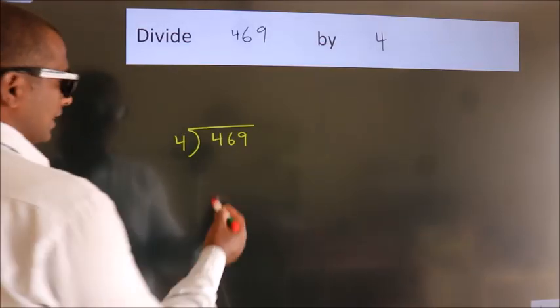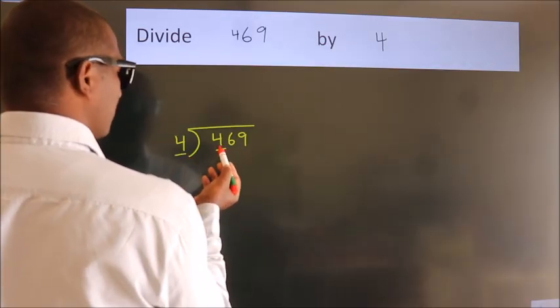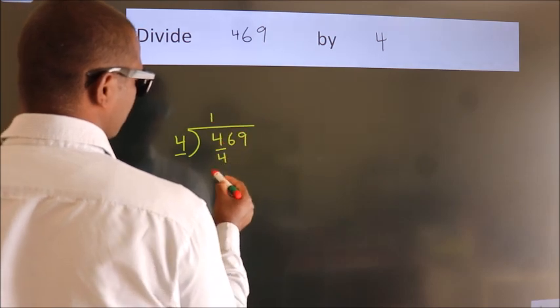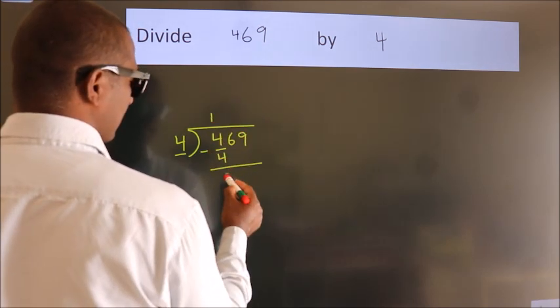Next, here we have 4. Here 4. When do we get 4? In 4 table. 4 once, 4. Now we should subtract. We get 0.